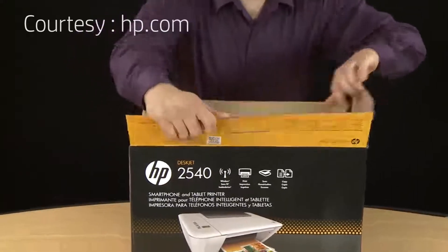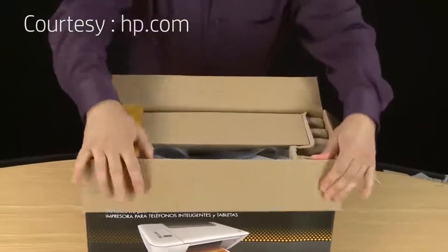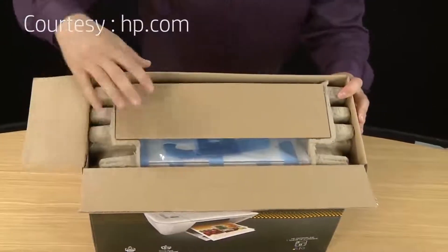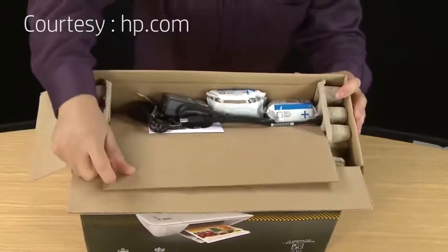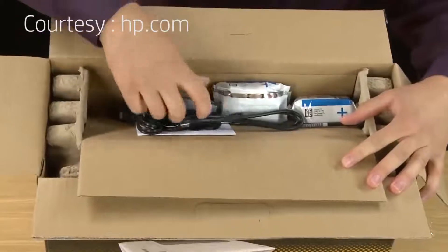You want to fold back the flaps so the items inside are easier to remove. Open up the smaller cardboard box inside and you'll find the accessories for your printer.